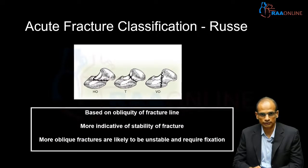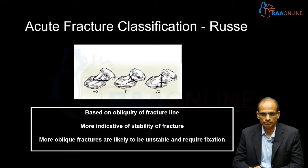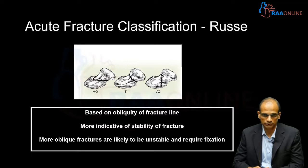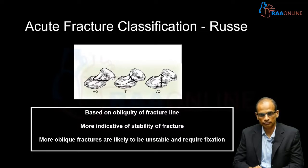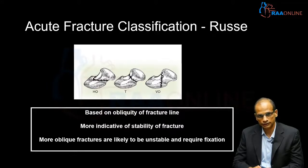The Roussi classification moves from horizontal oblique on the left, to transverse in the middle, to vertical oblique. As mentioned, the horizontal oblique is most stable. The transverse can involve a combination of compressive forces, which is favorable, and occasional shearing forces, placing it somewhere in between for stability. The vertical oblique fracture, as the picture clearly shows, is oriented such that shearing forces predominate, making it very unstable.